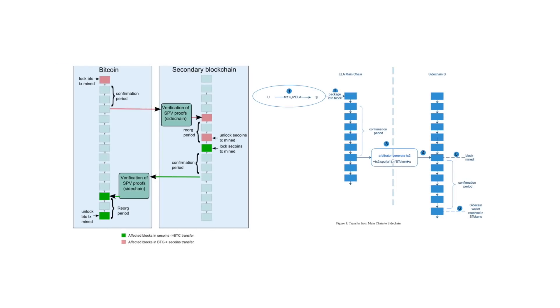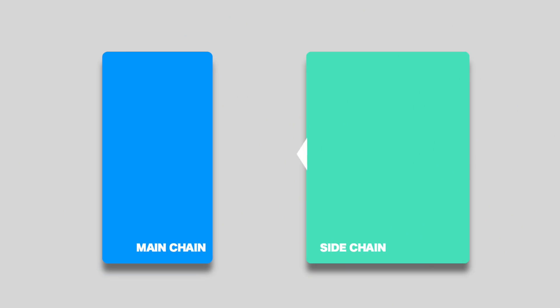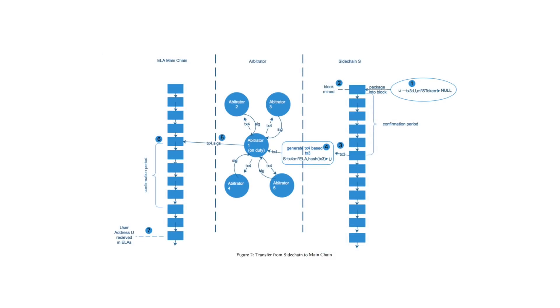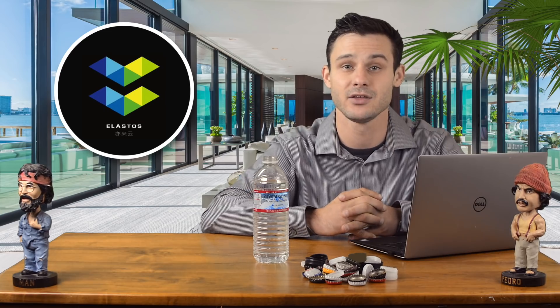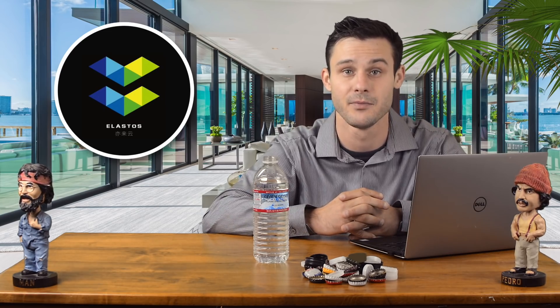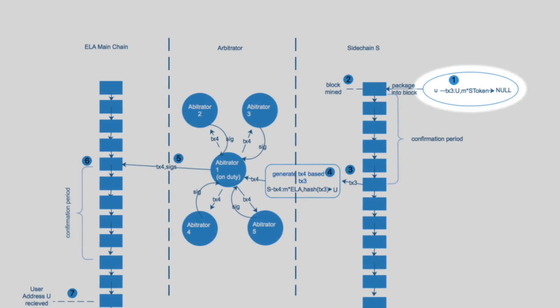Now here is where things get a bit complicated. As you can see from this picture of transfers from the mainchain to the sidechain of Elastos, it looks very similar to transfers with sidechains created by Adam Back and Greg Maxwell. But with original Bitcoin sidechains, the process of sending tokens from the sidechain back to the mainchain follows the same process. With Elastos it's different because of that one-to-many relationship. Transfers from the sidechain to the mainchain are guaranteed by the mainchain arbitrator mechanism. First, a user sends a request from the wallet on the sidechain from address lowercase u to withdraw m number of S tokens, with their mainchain address uppercase U attached. This transaction is known as transaction 3.